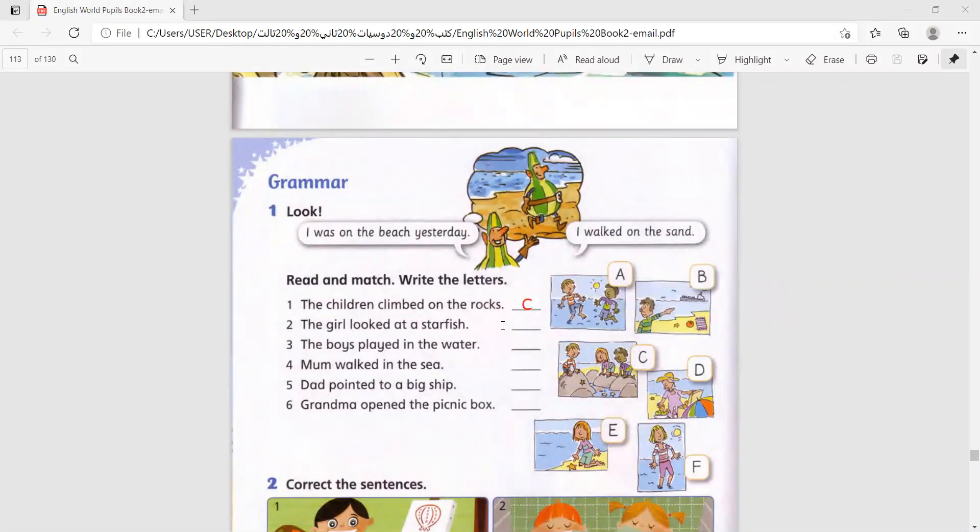The girl looked at the starfish. B. The boys played in the water. A. Mom walked in the sea. F. Dad pointed to a big ship. E. Finally, grandma opened the picnic box. D.